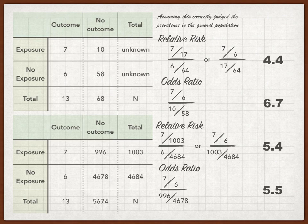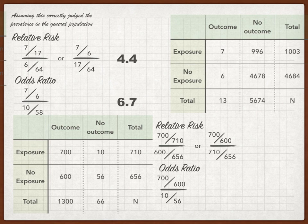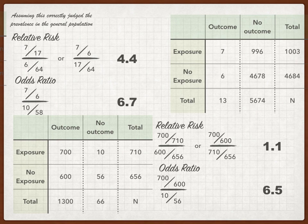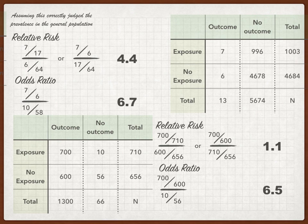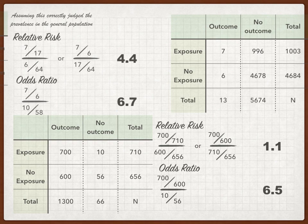Let's do one last group where we really crank up the number of outcomes: 700 exposed outcomes and 600 non-exposed outcomes — a very sick group. In this case, our relative risk is 1.1, but our odds ratio is 6.5. So if you go by odds ratios in this group, it seems vastly more common in the exposed group than the non-exposed. But looking at relative risk, it doesn't seem that impressive — you're just 1.1 times more likely to have the disease with the exposure.